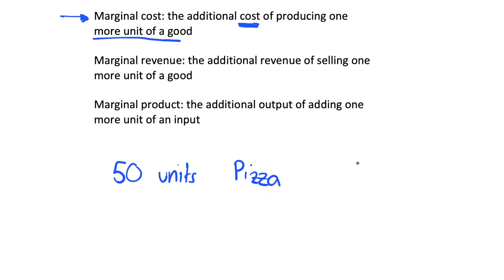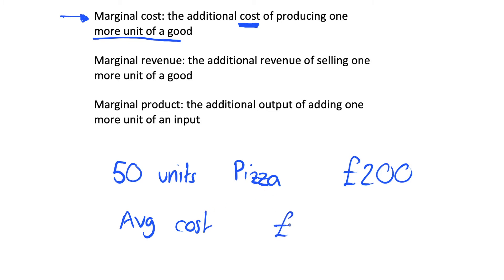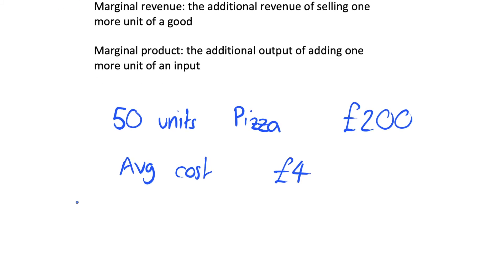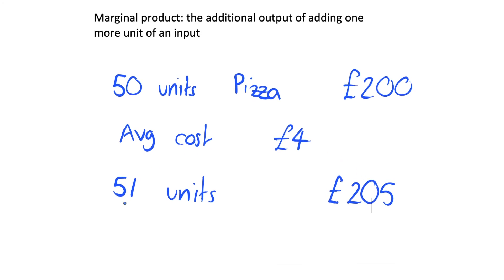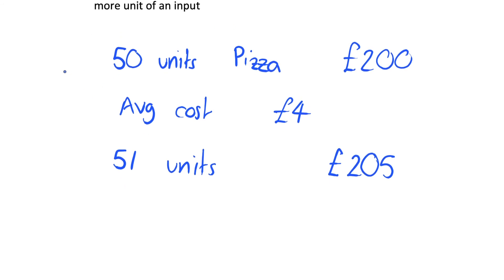It costs us £200 to produce 50 units of pizza, and so our average cost is going to be £4 per pizza on average, because we're just doing 200 divided by 50. But we don't really care about this when we're doing marginal costs. What we care about is the increase when we go to produce one more unit of pizza. If we go to produce 51 units, it's going to now cost us £205 to produce 51 units of pizza.